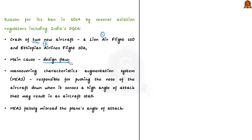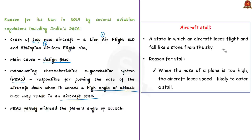Investigation found that the main cause of both crashes was a design flaw in the aircraft. The latest Boeing 737 is installed with MCAS — the Maneuvering Characteristics Augmentation System — which is responsible for pushing the nose of the aircraft down when it senses a high angle of attack that may result in a stall. If the nose of a plane is too high, the aircraft loses speed and may stall — a state in which it loses flight and can fall like a stone. In both crashes, the MCAS falsely misread the plane's angle of attack during ascent and forced the nose down, ultimately causing the crash.